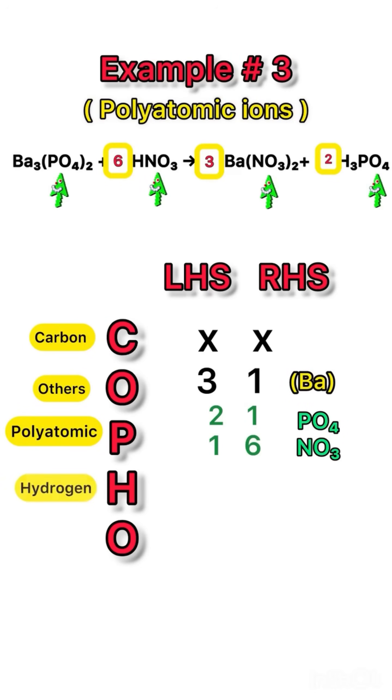For hydrogen, after adding 6, both sides are already equal, so we're good to go. And point to be noted: for oxygen we do not need to balance it separately. They're inside the polyatomic group. Now check, your equation is balanced.